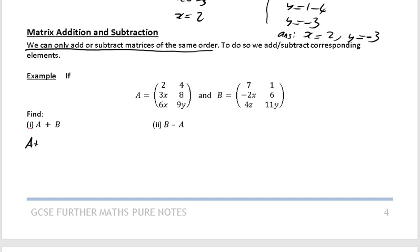So here we've got two things to do. First one we want to do is A plus B. So if you look at A plus B, adding your first row, first column element, you're going to get 2 plus 7, which is just going to be 9. Adding your first row, second column element, 4 plus 1, is going to give you 5.